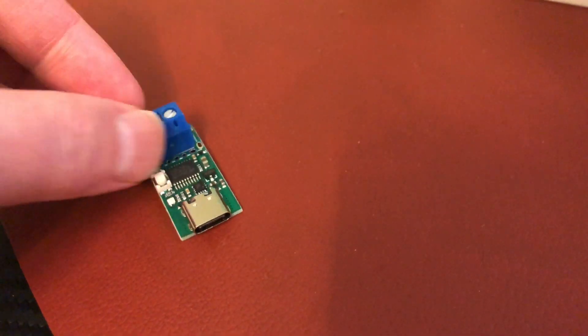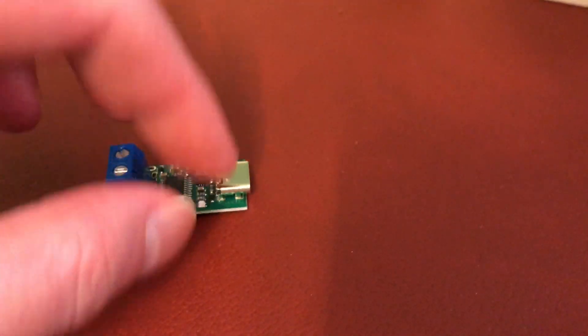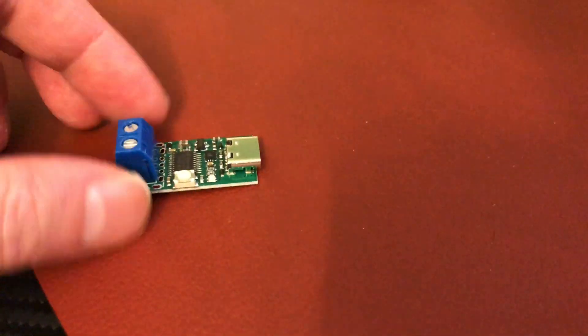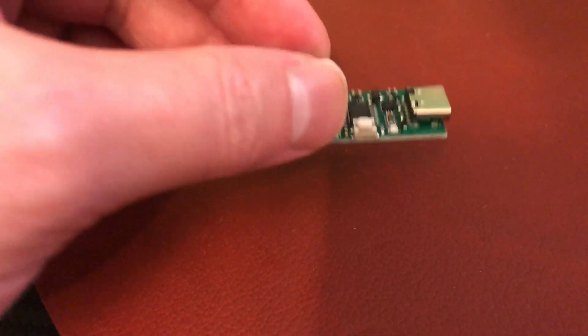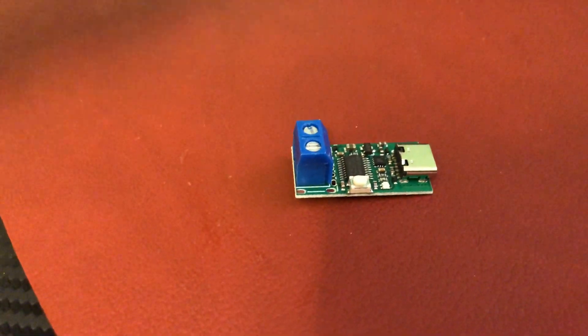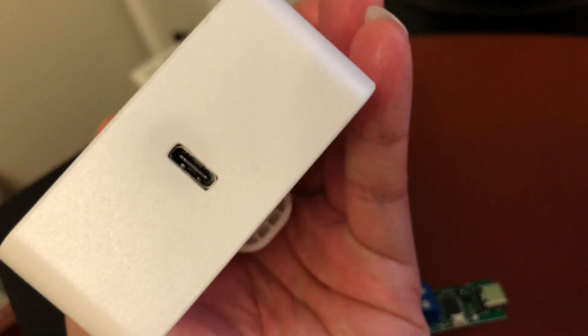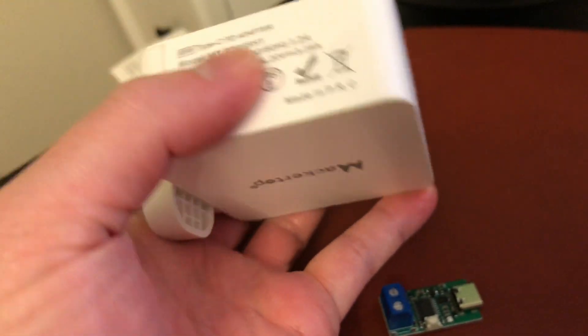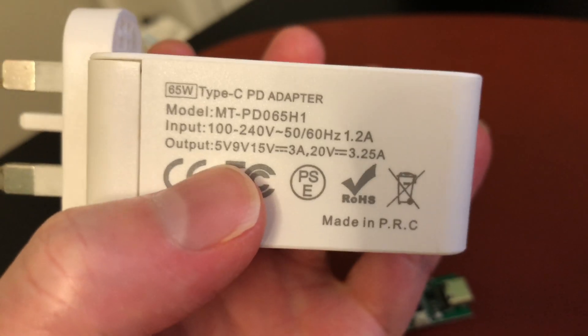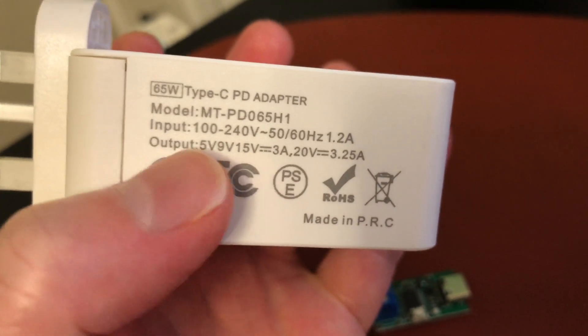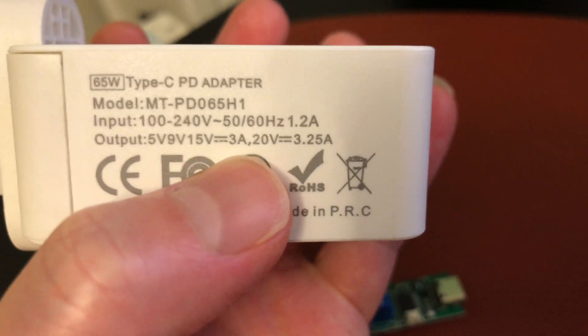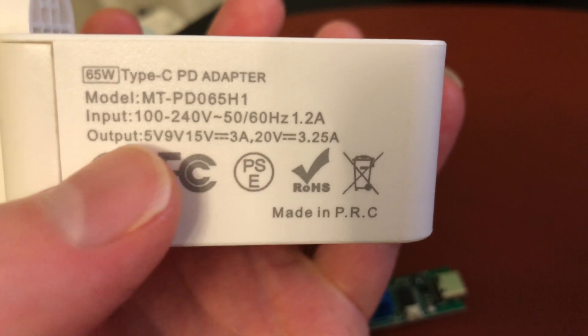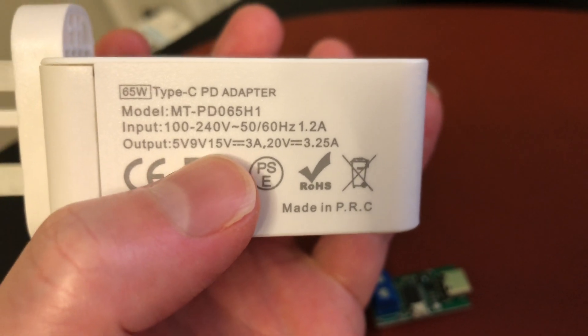Here's an example of a USB-C PD power adapter. As you know, with USB-C PD, the power supplies can normally output a wide range of voltages. Here we've got 5 volts, 9 volts, 15 volts, and 20 volts.